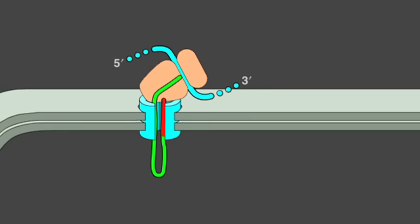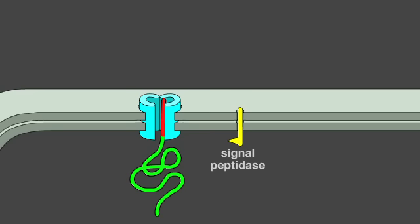Once the protein has passed through the membrane, it is released into the ER lumen, after the signal sequence has been cleaved off by a signal peptidase located on the luminal side of the ER membrane.